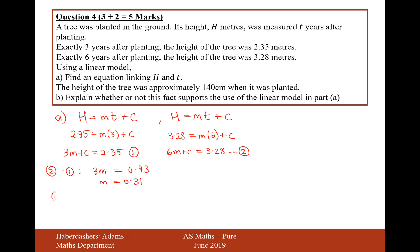Let's plug this back into equation number 1. 3m is equal to 0.93 plus c equals 2.35. So therefore, c is going to equal 2.35 minus 0.93 equals 1.42. So therefore, the model is going to look like h equals 0.31t plus 1.42.